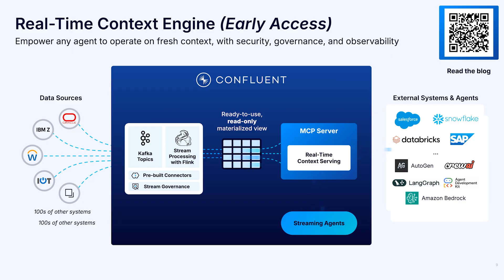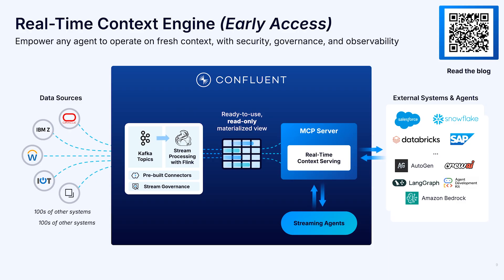Built directly on Confluent's data streaming platform, it abstracts away the complexity of Kafka, Flink, and the MCP infrastructure with enterprise-grade security, governance, and observability built in. With Real-Time Context Engine, your AI is never stuck waiting for a batch job or based on unreliable data. It learns and adapts as your data evolves.